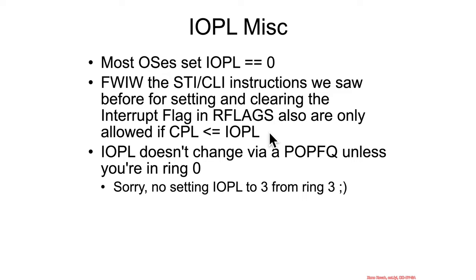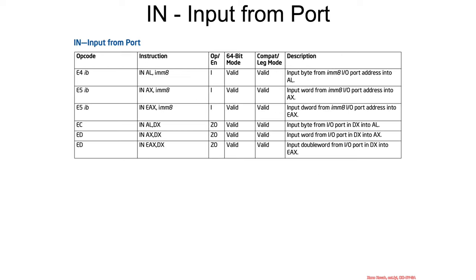In case you're thinking you could just use POPFQ to change the IOPL to 3 and then use port I/O from ring 3 — that's not going to work, because POPFQ will not change the IOPL field unless you're already in ring 0.